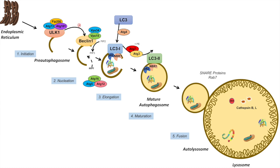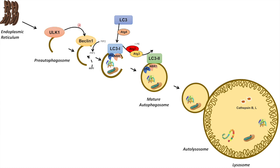Because this process is very important, there are many types of regulation. One is through AMPK (AMP-activated protein kinase), which activates ULK1. Another is through mTOR, which inhibits ULK1. There is also a protein known as BCL2 that can bind to Beclin-1 to inhibit it as well.